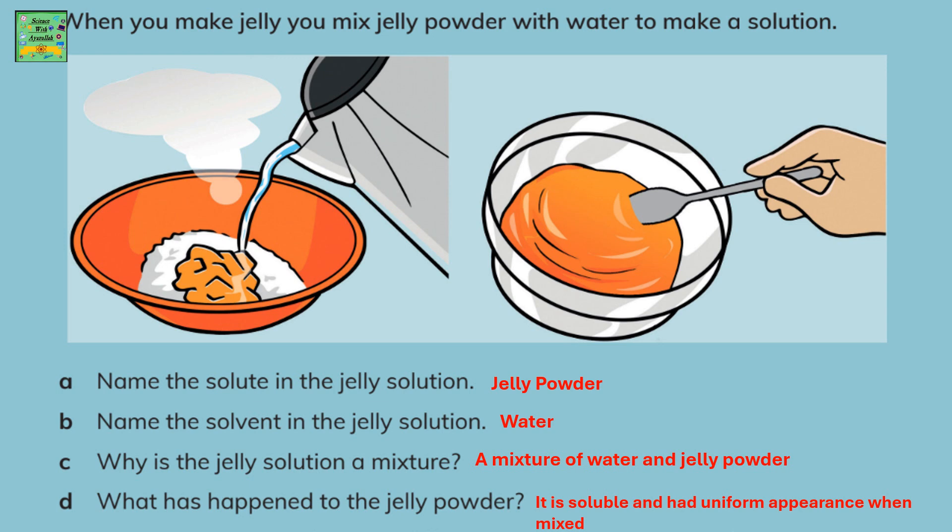When you make jelly, you mix the jelly powder with water to make a solution. Name the solute in the jelly solution. It's the jelly powder because that's present in lesser amount and also it's solid. Name the solvent in the jelly solution. It's water. Why is the jelly solution a mixture? It is a mixture because of water and jelly powder.